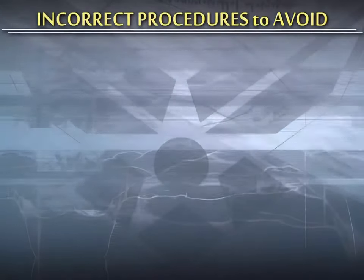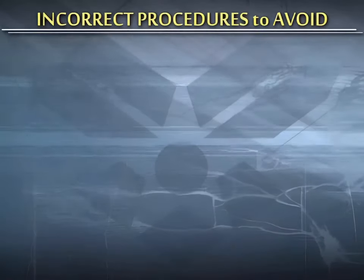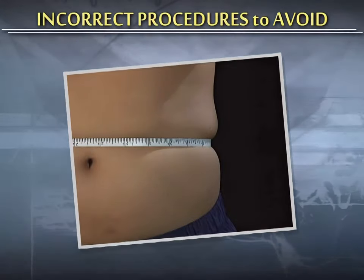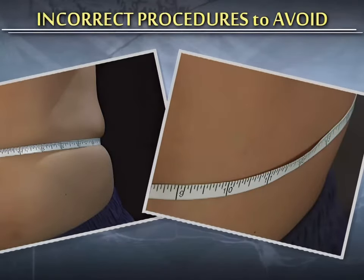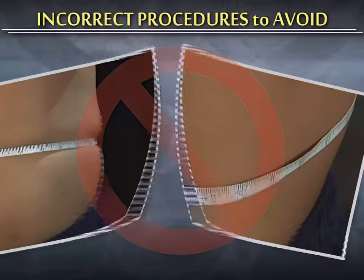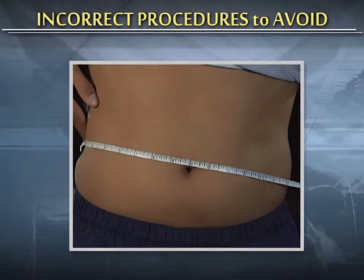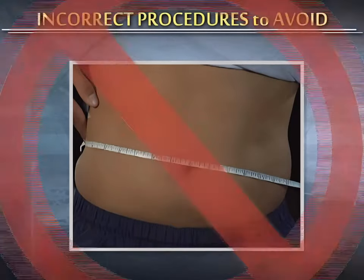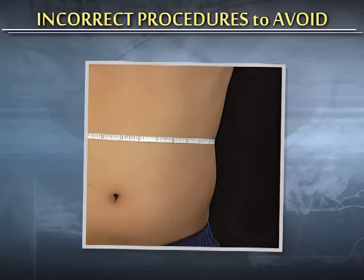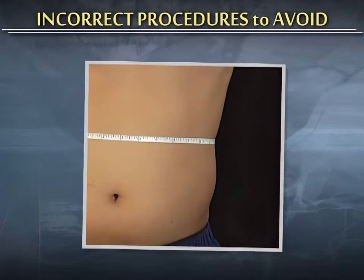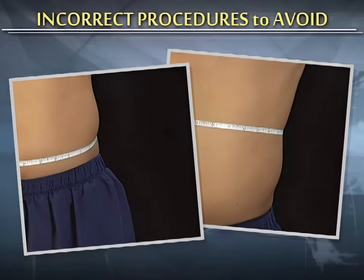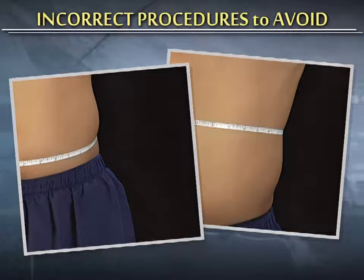For assessors, here are some improper techniques to avoid. Don't pull the tape too tight or allow it to be too loose, as this will render an incorrect measurement. If the tape is not parallel, you'll get an incorrect measurement. And if the tape is placed too high above the landmark — the superior border of the iliac crest at the mid-axillary line — or too low, you will also get an incorrect measurement.